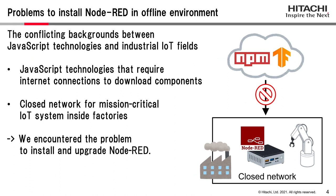Next, I will explain the problem we encountered in our production systems. There are conflicting backgrounds between JavaScript technologies and industrial IoT fields. First, JavaScript technologies tend to require internet connections to download components. For example, the npm command accesses the npm repository on the internet. In another case, TensorFlow models are also available on the internet. On the other hand, mission-critical IoT systems inside factories are in closed networks to be as stable as possible. Due to this situation, we encountered problems when installing and upgrading Node-RED.